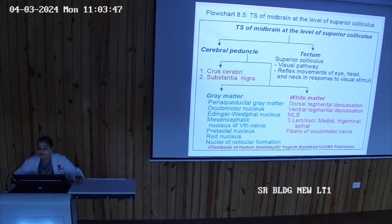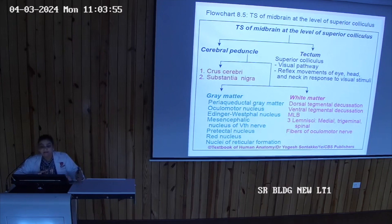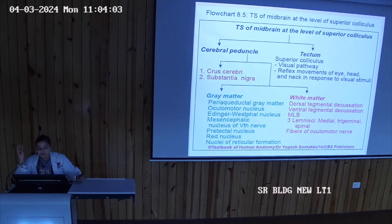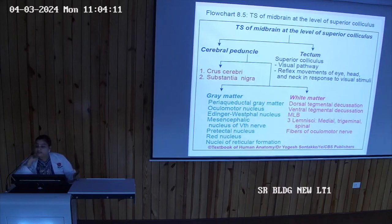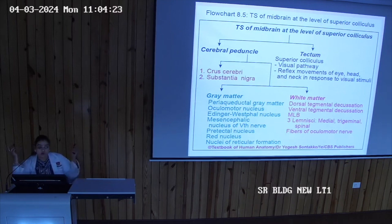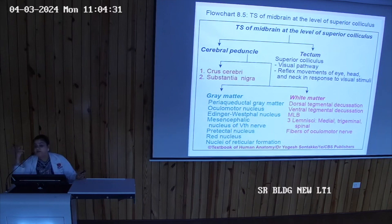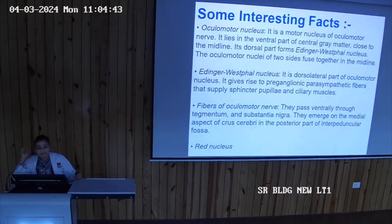Flow chart for TS at the level of superior colliculus: two parts — cerebral peduncle and tectum. Cerebral peduncle has crus cerebri, substantia nigra, and tegmentum. In the tegmentum grey matter: periaqueductal grey matter, oculomotor nucleus, Edinger-Westphal nucleus, mesencephalic nucleus of 5th nerve, pre-tectal nucleus, red nucleus, and nuclei of reticular formation. White matter: dorsal tegmental decussation of Meynert, ventral tegmental decussation of Forel, medial longitudinal bundle, three lemnisci — medial, trigeminal, and spinal — and fibers of the oculomotor nerve.